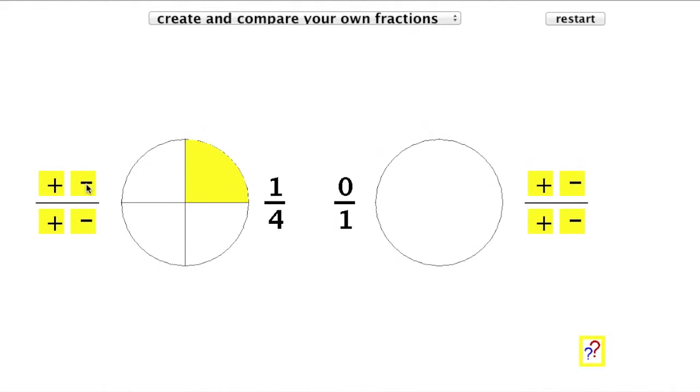Now only one of these quarter slices is selected, and this fraction is one quarter. It's written like this: one on top and four on the bottom. This is an example of what's called a unit fraction. It's so called because just one slice is selected.